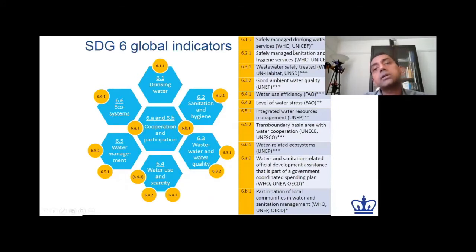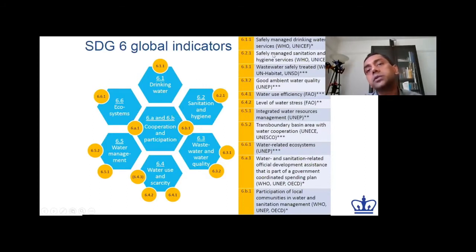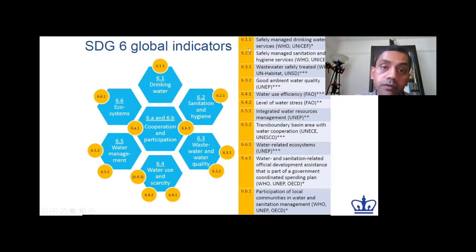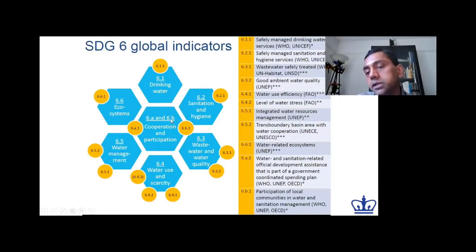On the right-hand side here, under this table, I'm pointing out the different custodial agencies of the United Nations which are closely associated with each of the goals and targets. This is essentially a list of the different custodial agencies within the United Nations.